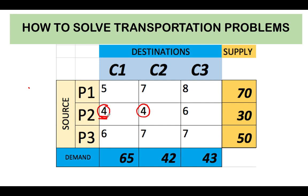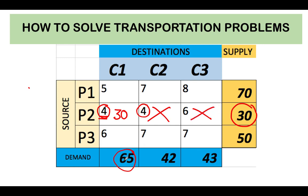We want to maximize the amount of goods allocated to destination C1, since the cost of transporting goods there is lowest. The total demand for C1 is 65, and the total supply from P2 is 30 units. We select the smaller value — 30 is smaller than 65 — so we allocate all 30 items to this cell. That uses up all supply from plant P2. Since the demand of 65 is only partially fulfilled, we still need to fulfill 35 more items for customer C1.